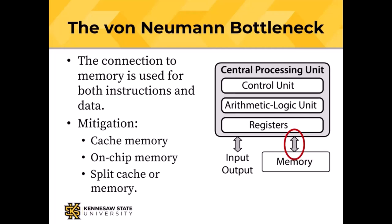The trouble is that although the Harvard architecture sort of gets rid of the von Neumann bottleneck, what if I need very few instructions and a whole bunch of data? With the von Neumann architecture, as long as instructions and data together fit in that one memory, everything is happy.